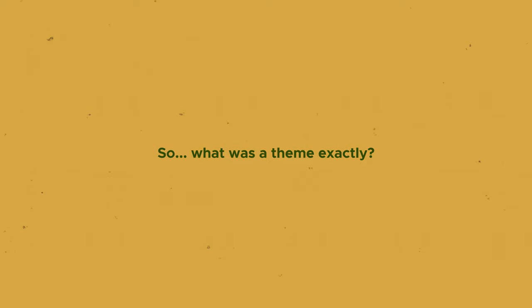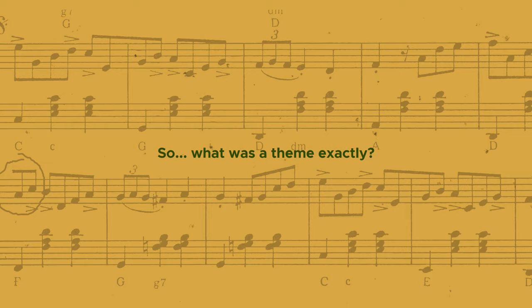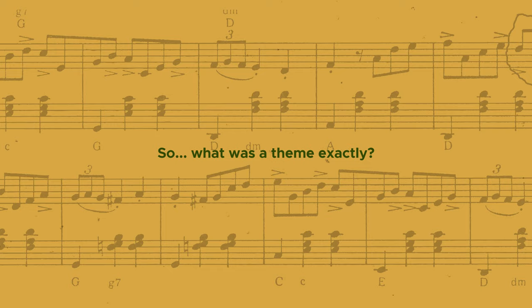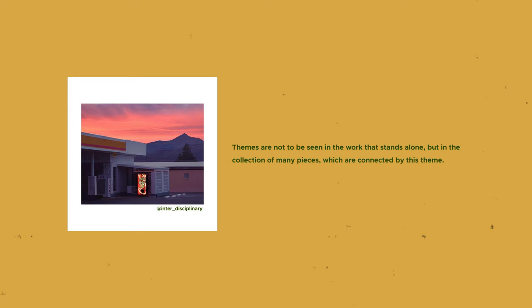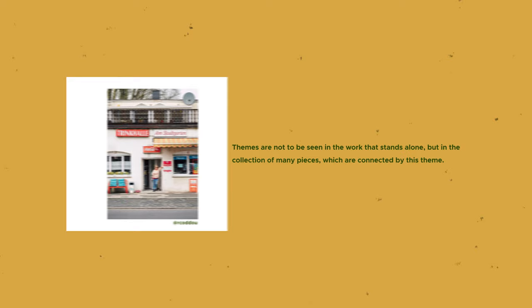In music, for example, a theme can be a melodic subject or a concentration on certain aspects, such as pacing and movement. Or a theme can be the careful choice of the instruments, which at first glance don't appear to be a theme. But when the whole work is observed from a distance, the theme can be recognised. This act of zooming out and viewing the work as a whole instead of the single pieces of work is essential to determine a theme. Themes are not to be seen in the work that stands alone, but in the collection of many pieces which are connected by this theme.